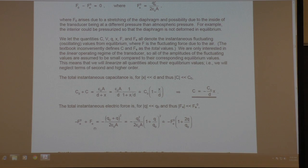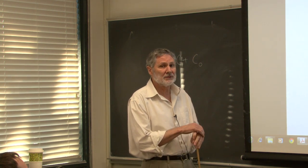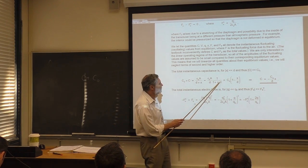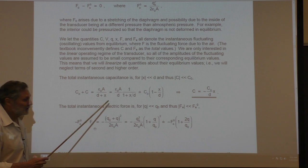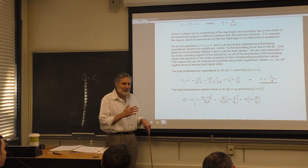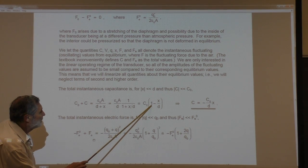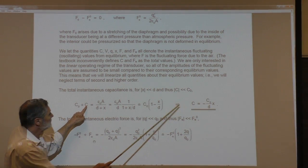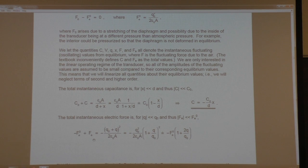We make this approximation for relatively small displacements. This tells you immediately that this is a nonlinear transducer — drive it too hard and you'll see nonlinear effects. After linearizing, the fluctuating capacitance c equals −C₀ x/D. We'll need that later.